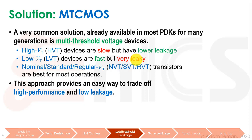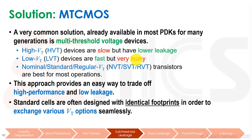Multi-threshold CMOS provides an easy way to trade off high performance and low leakage. Standard cell libraries typically have identical footprints but one gate will be made with high VT transistors, one with normal, and one with low VT. We can swap out the different flavors of these gates — if we have extra slack on our timing paths we can put a high VT, or if we have negative slack we can put a low VT, trying to meet our timing constraints.